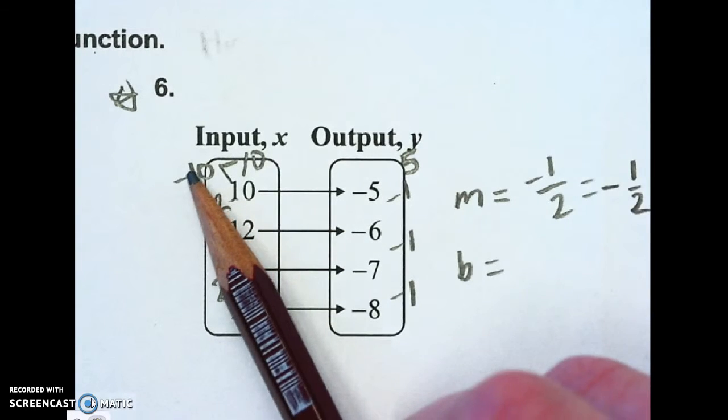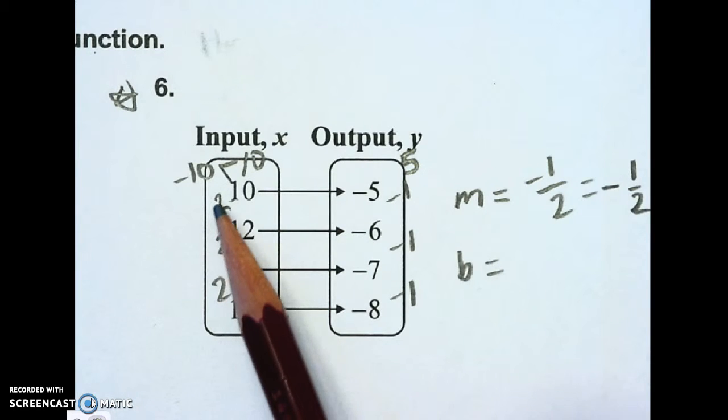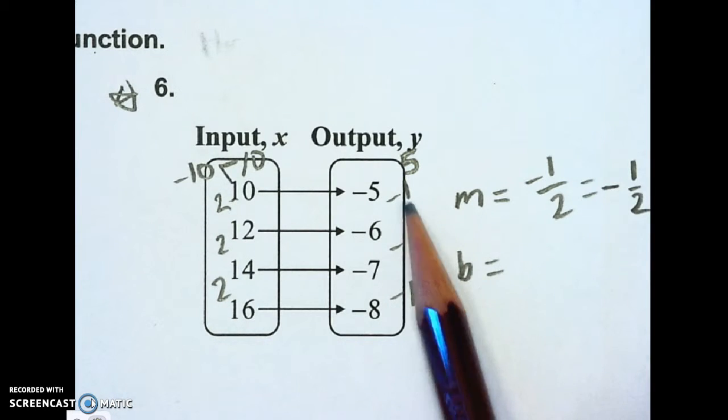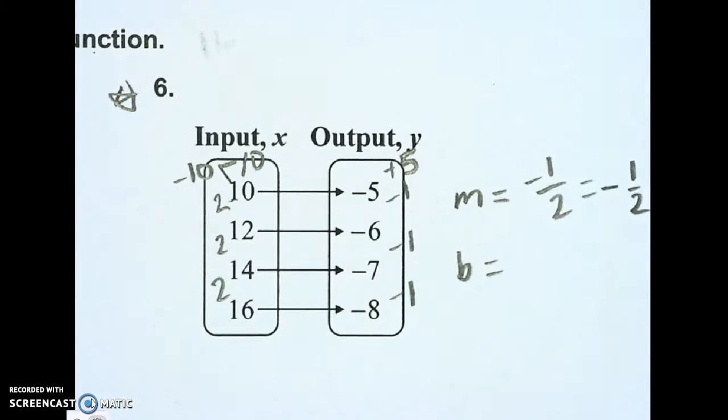But since this was a negative, this needs to be a positive, because when this 2 was positive, the y's were negative. So if the x's are negative, the y's have to be positive. So I know I need to add 5 here to get back to 0.